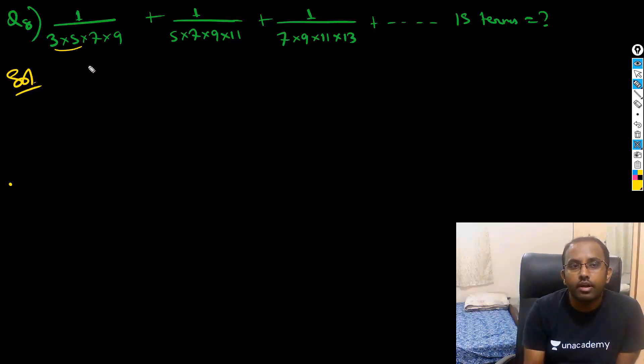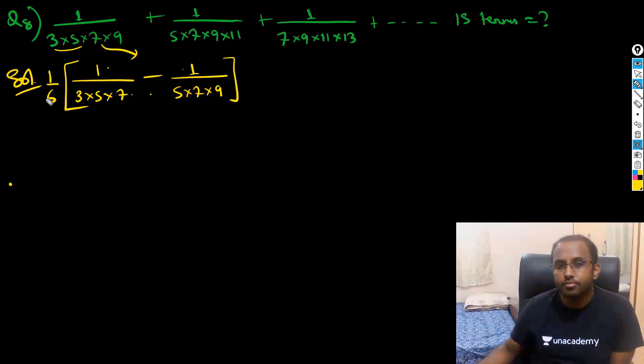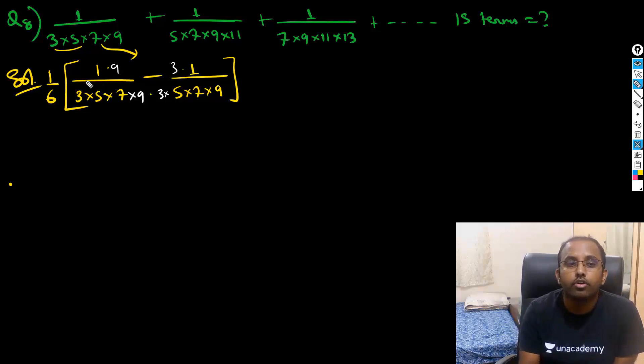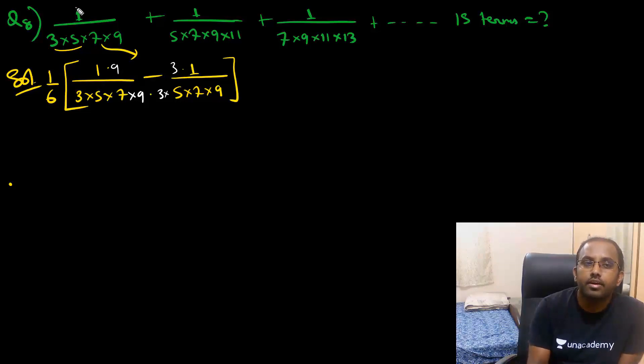So how do you break this? You break this kind of numbers as 1/(3×5×7) minus 1/(5×7×9). So I can see what is left out here - I can multiply a 9 and multiply a 3 here. So 9 minus 3 is 6, so 6 should be divided outside. I should multiply a 9 here and a 3 here, and 9 minus 3 will be 6. But here it is 1, so I should divide by 1/6 so it gets cancelled.